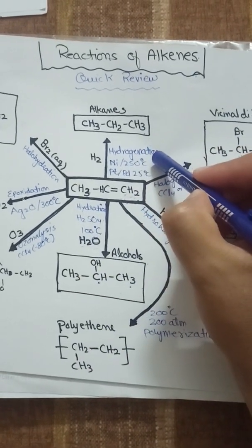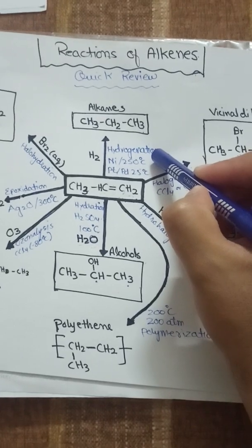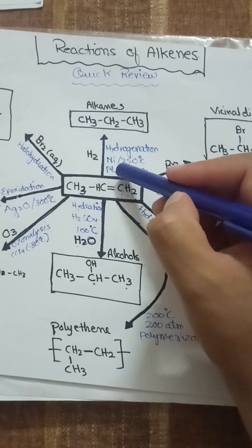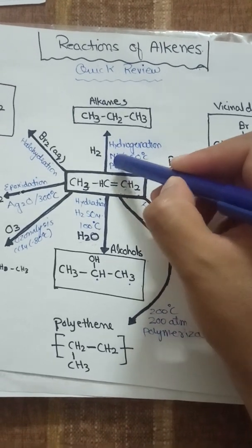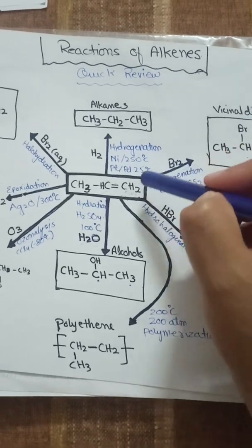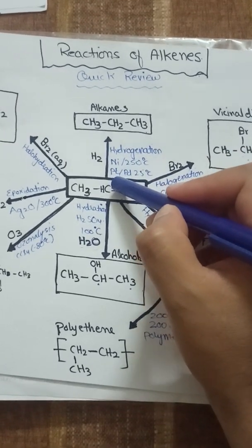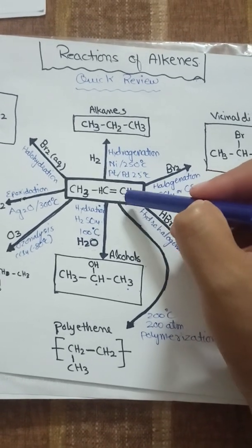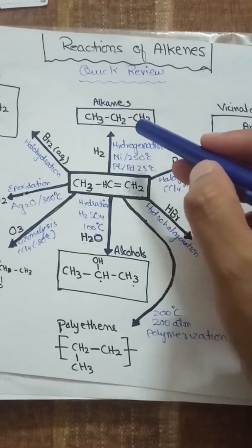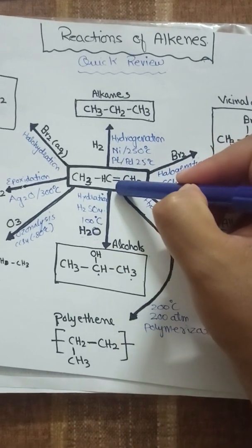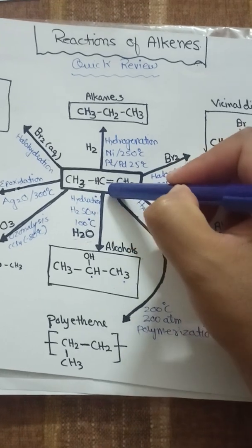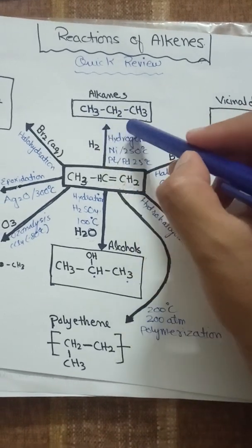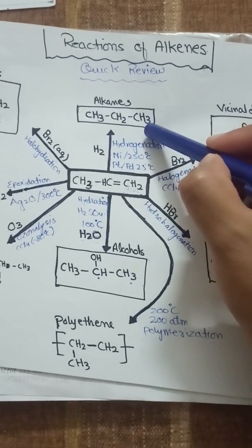The first reaction is hydrogenation, which is the addition of hydrogen. This reaction takes place in the presence of nickel as a catalyst at 250°C, or we can use platinum or palladium at room temperature (25°C). The product will be alkanes. The pi bond is broken down and we get saturated hydrocarbons.